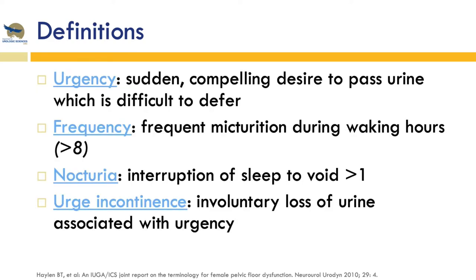Urgency is a sudden urge to pass urine which is difficult to defer. Frequency is frequent urination during waking hours. Nocturia has been defined as the interruption of sleep in order to void at least greater than one time during the night. And urge urinary incontinence is the involuntary loss of urine associated with urgency, as opposed to stress urinary incontinence.